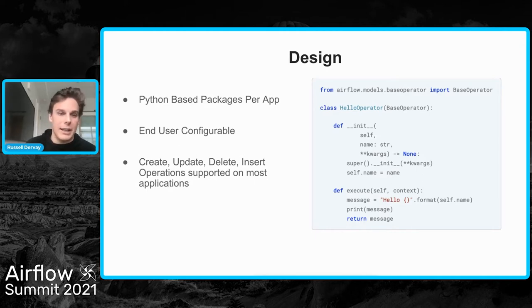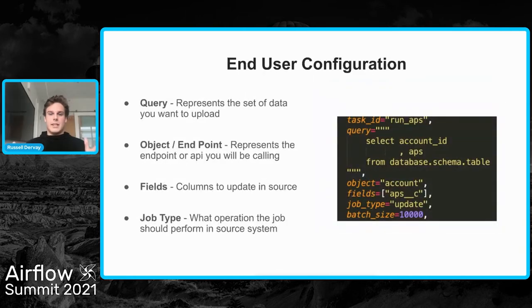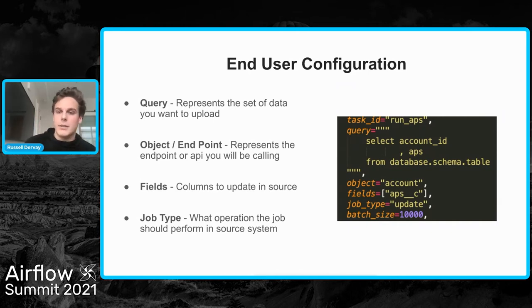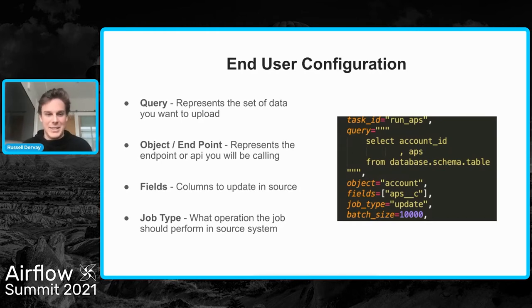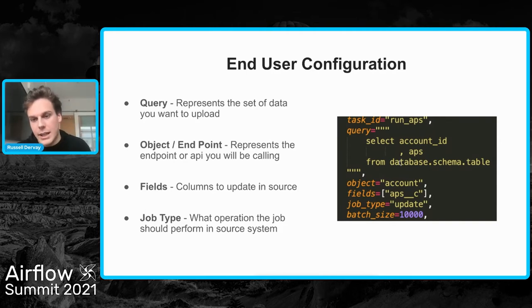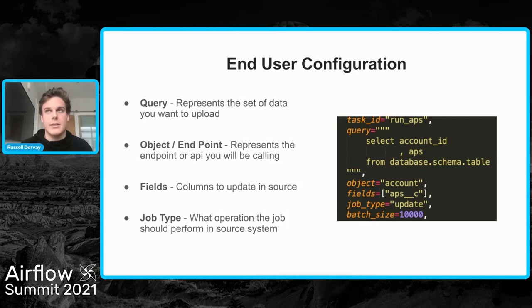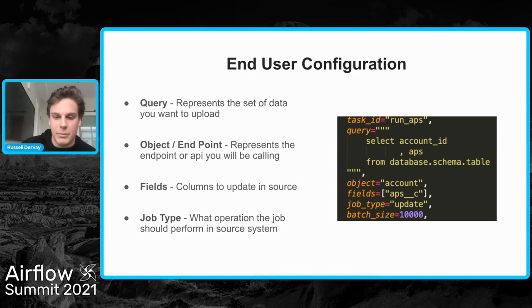We've got a lot of automation where we're even creating new objects — our partner portal is running on this, in case anyone is a partner. This is an example of what an end user configuration looks like. There's an operator — in the case I'm talking about today, we're using Salesforce. You give it a task ID and a query, which is the result set you want to push into your application. You give it an endpoint or object — in Salesforce's case, we can just say 'account' — and then the fields you want to sync. In this example, we take an account ID and our APS score (account propensity score) from our fresh table, the job type is 'update', and we give it a batch size to limit API usage. You can create new records simply by changing the job type.